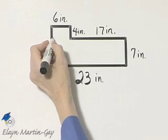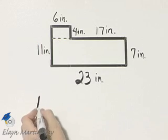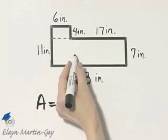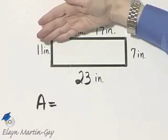You can divide it this way, or this way. I'll divide it that way. So area is going to be this area, plus this area.